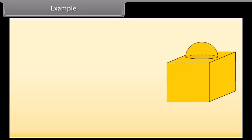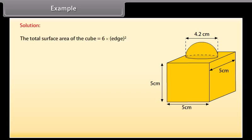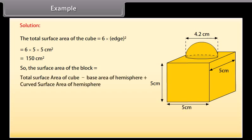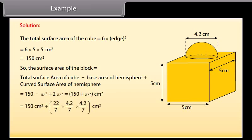This decorative block is made of two solids: a cube and a hemisphere. The base of the block is a cube with edge 5 cm and the hemisphere fixed on top has a diameter of 4.2 cm. Find the total surface area of the block. The total surface area of the cube = 6 × edge² = 6 × 5 × 5 = 150 cm². The part of the cube where the hemisphere is attached is not included. Surface area of block = total surface area of cube − base area of hemisphere + curved surface area of hemisphere = 163.86 cm².